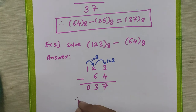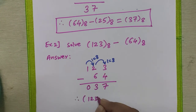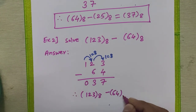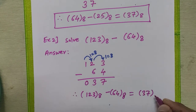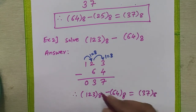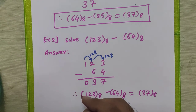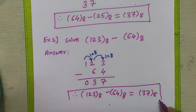Therefore, 123 in octal minus 64 in octal equals 037 in octal. We discard the leading 0 because placing a 0 in front of a number does not change its value. So the final answer is 37 in octal.